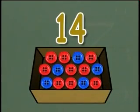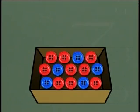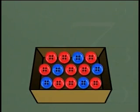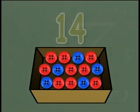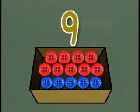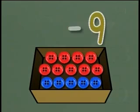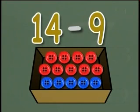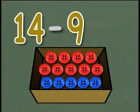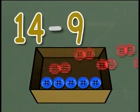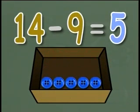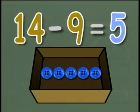There are 14 buttons in a box. 9 are red buttons and the rest are blue. How many buttons are blue? The total is 14 and there are 9 red buttons. To find the number of blue buttons, we have to subtract 9 from 14. The number sentence is 14 minus 9 equals 5. There are 5 blue buttons in the box.